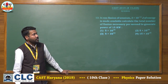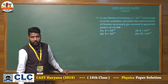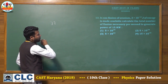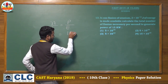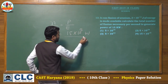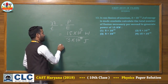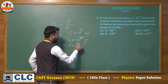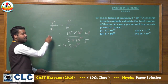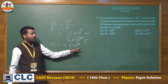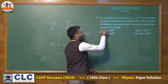Thirteenth question: in one fission of uranium, 3×10⁻¹¹ joule of energy is released. Calculate the total number of fissions necessary per second to generate a power of 15 kilowatts. Number of fissions per second = Power / Energy per fission = 15×10³ / (3×10⁻¹¹) = 5×10¹⁴. The right answer of question 13 is the first option: 5×10¹⁴.